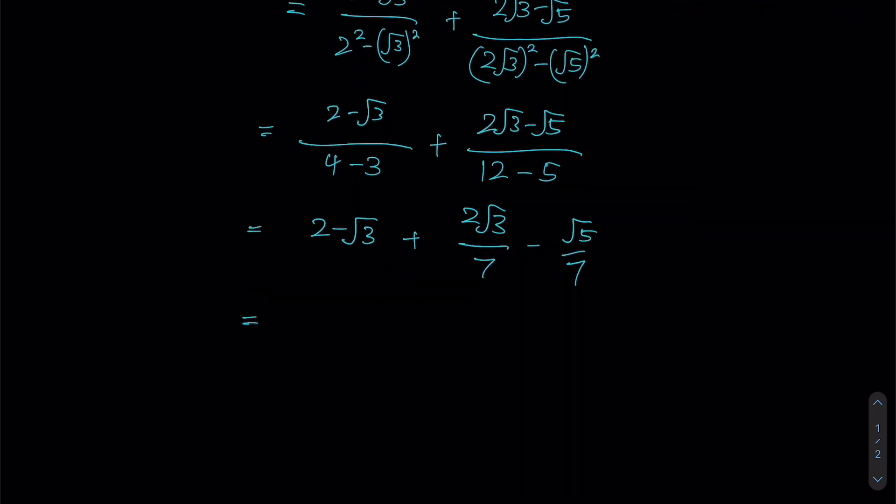so now it's time for us to look at which terms are similar. So 2 is the only one that's a whole number here. Now looking at root 3, I have negative root 3 over here plus 2 over 7 of root 3. So minus 1 plus 2 over 7 gives us negative 5 over 7, right?